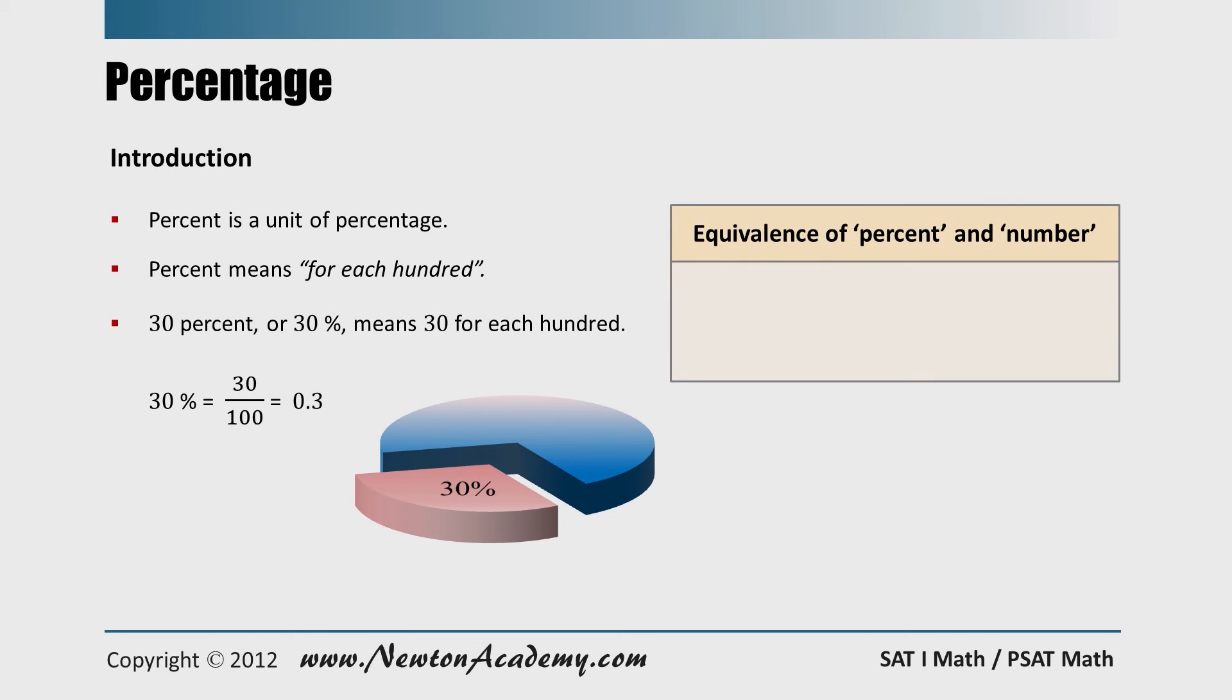Therefore, if you want to change X percent into a number, you just divide that number by 100. And reversely speaking, if you have a number and you want to change that number to percent, you just multiply that by 100. This is what you already know, but let's practice with some examples before we challenge some problems.